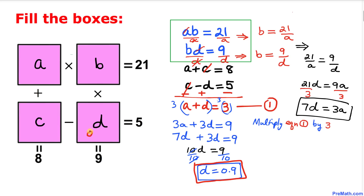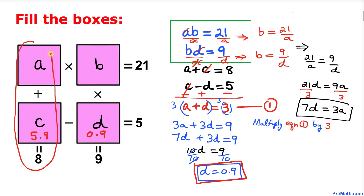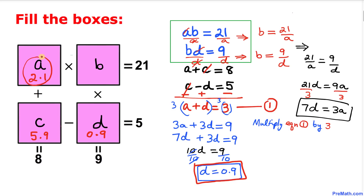So D equals 0.9 — I'll put 0.9 in that box. Now we can find C: since C minus D equals 5, C must be 5.9 because 5.9 minus 0.9 equals 5. For A, since A plus C equals 8, A equals 2.1 because 2.1 plus 5.9 equals 8.